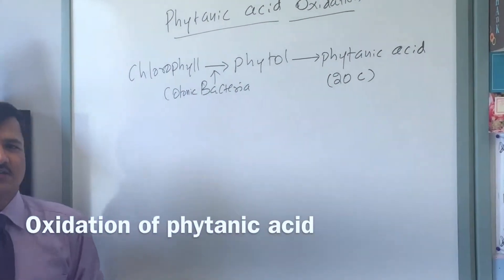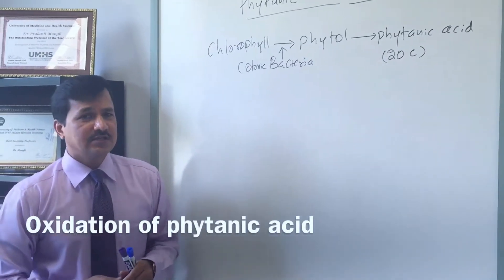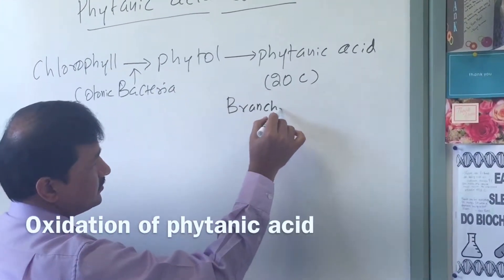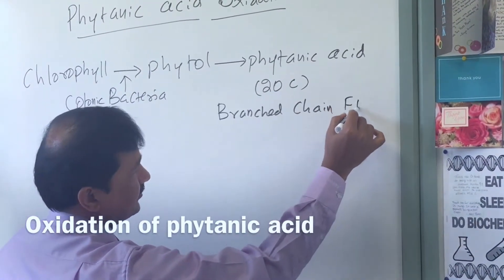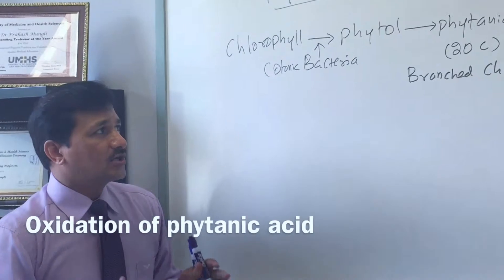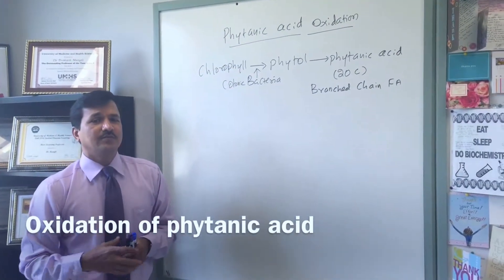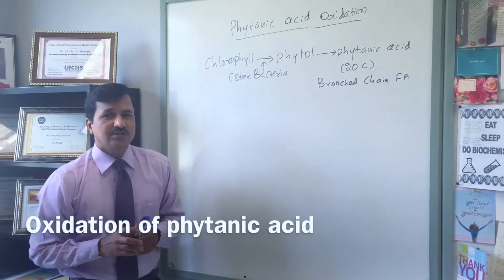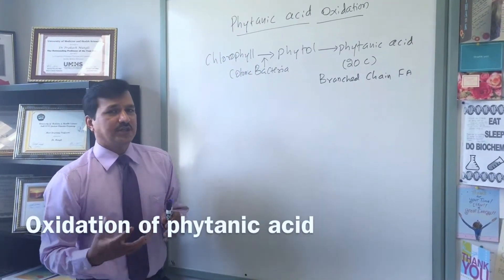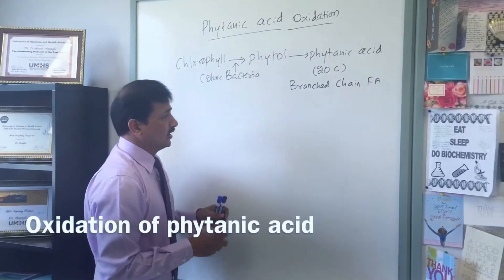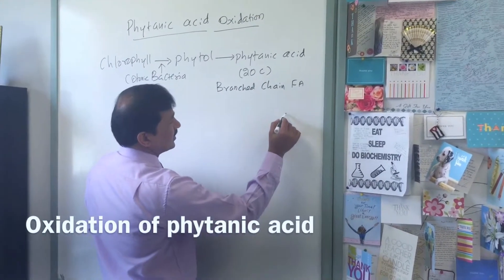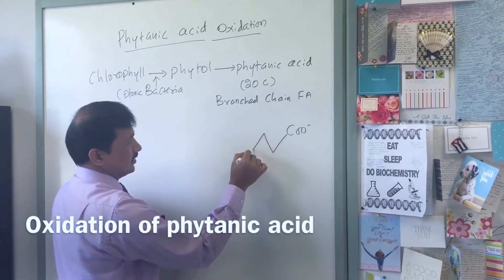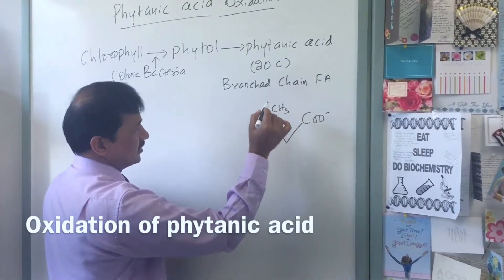The specialty of phytanic acid compared to other fatty acids is that phytanic acid is a branched chain fatty acid — we need to take note of that. It's a branched chain fatty acid which has got 20 carbons. The oxidation of this branched chain fatty acid is a little different from the beta oxidation going on commonly in our mitochondrial matrix. Let me first write down the structure of phytanic acid. It has a carboxyl group and methyl branch points.